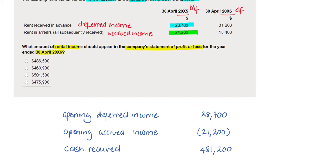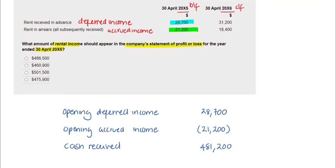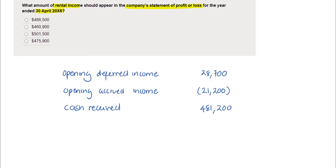Next, we're going to deal with the closing balances of deferred and accrued income, starting with the closing deferred income. The closing deferred income needs to be deducted — it relates to next year. We're going to remove it from the balance of the rental income that we show in our current year.